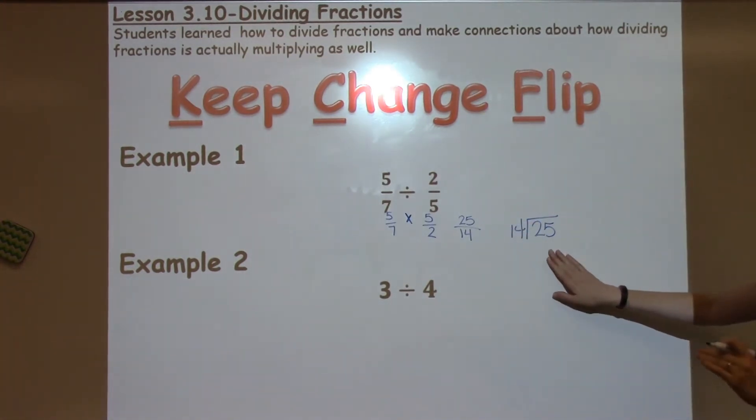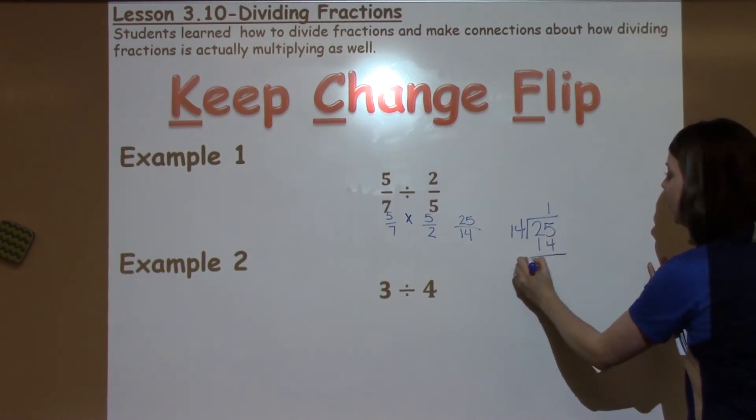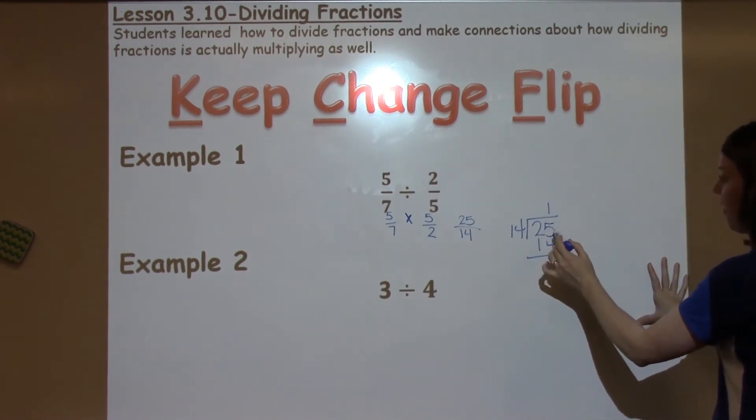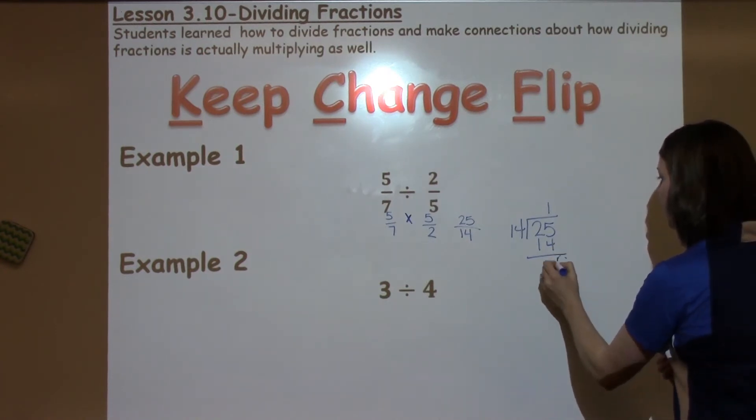I know 14 can go into 25 one time. 1 times 14 is 14. When I subtract, I have 5 minus 4 is 1, and then 2 minus 1 is 1.